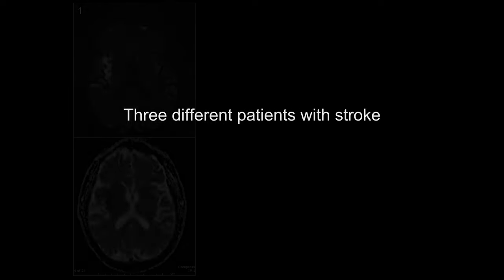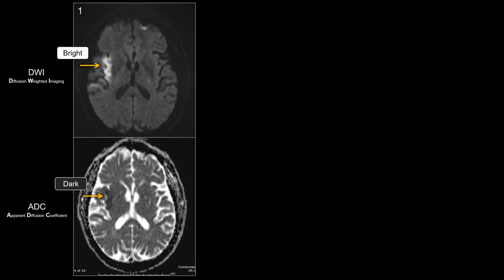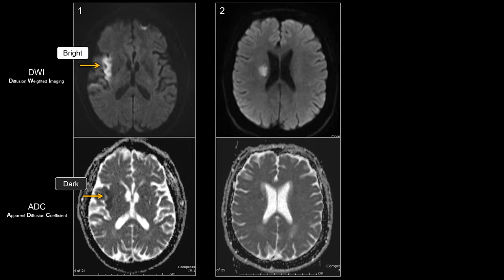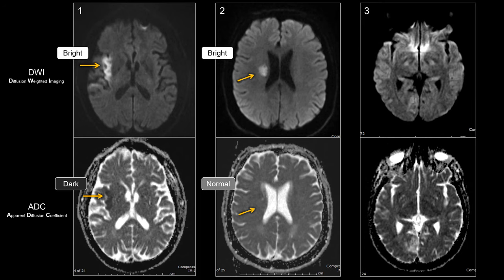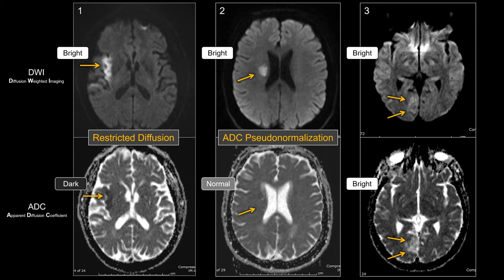Three different patients with the same diagnosis of stroke. Patient one: DWI signal is bright, ADC is dark. Patient two: DWI is bright but ADC is relatively normal in signal intensity compared to the adjacent tissue. Patient three: DWI is bright and ADC is also bright. We call the first restricted diffusion, the second ADC pseudonormalization, and the third T2 shine-through.